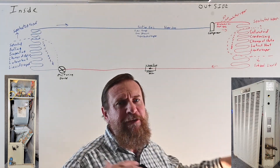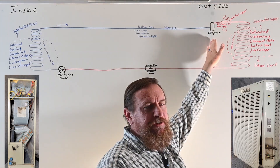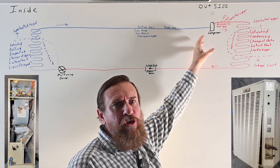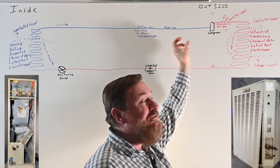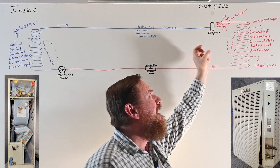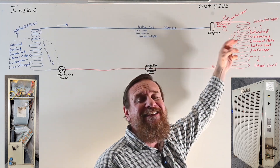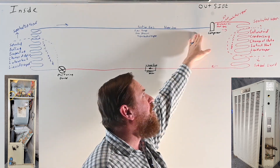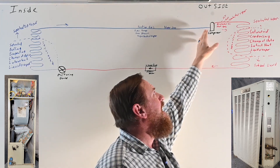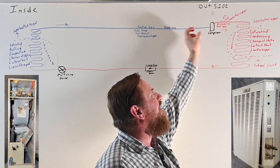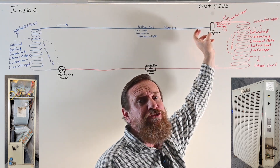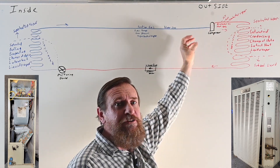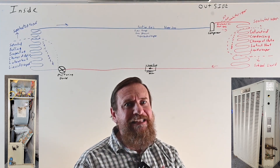Let's take a look at that again from a two-dimensional standpoint. We're going to start from a compressor. We have a low temperature, low pressure, superheated vapor coming in, and high temperature, high pressure, superheated vapor coming out — the discharge line, also known as the hot gas line. Coming in is the suction gas line, a low temperature vapor. That's going to be key later on.